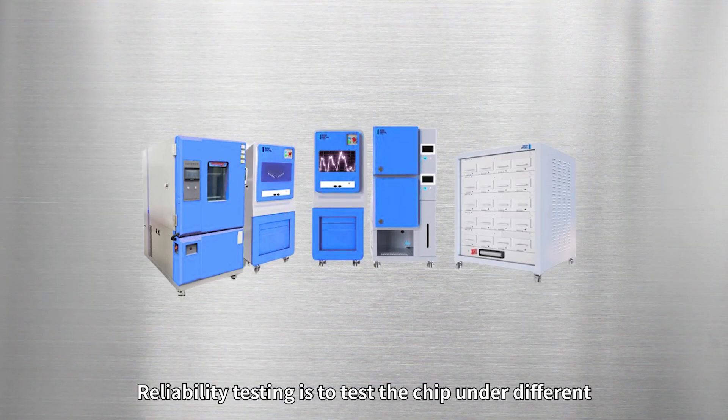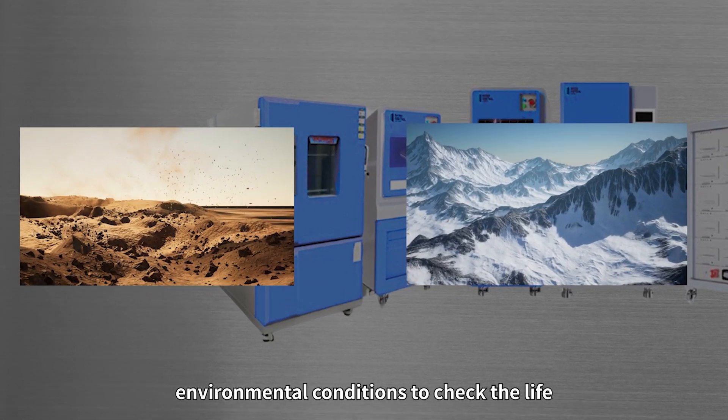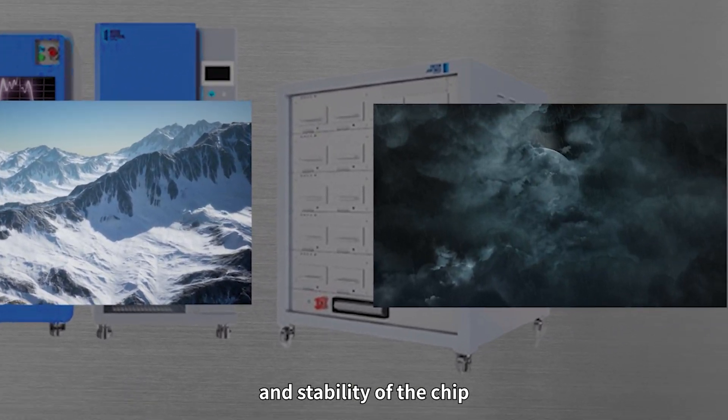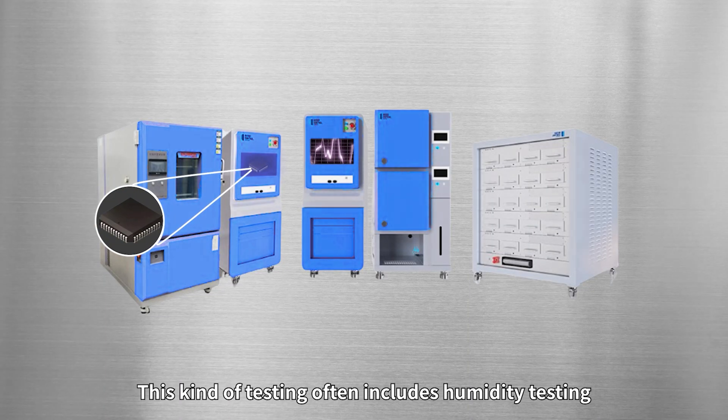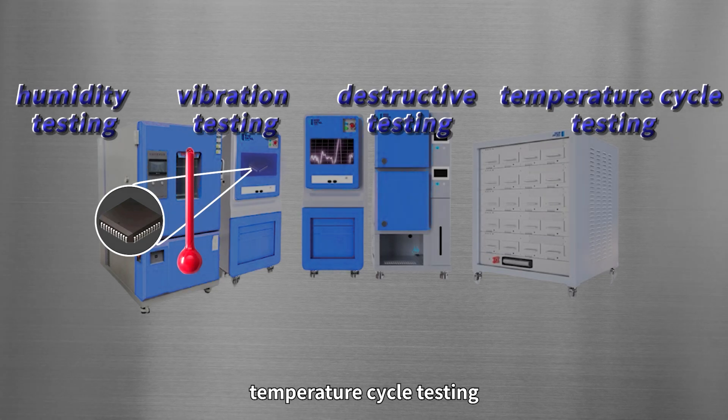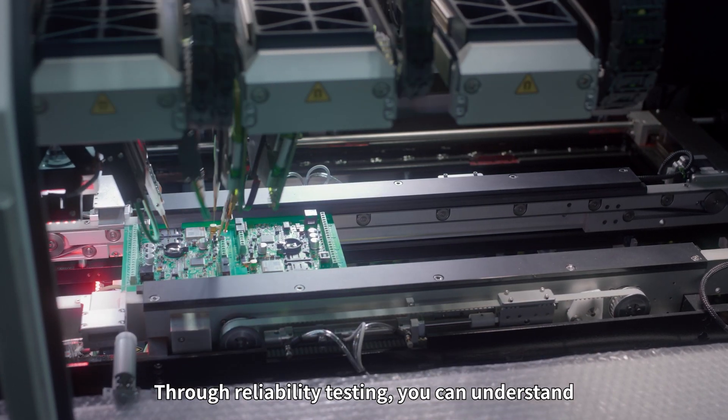Reliability testing is to test the chip under different environmental conditions to check the life and stability of the chip. This kind of testing often includes humidity testing, vibration testing, destructive testing, and temperature cycle testing.